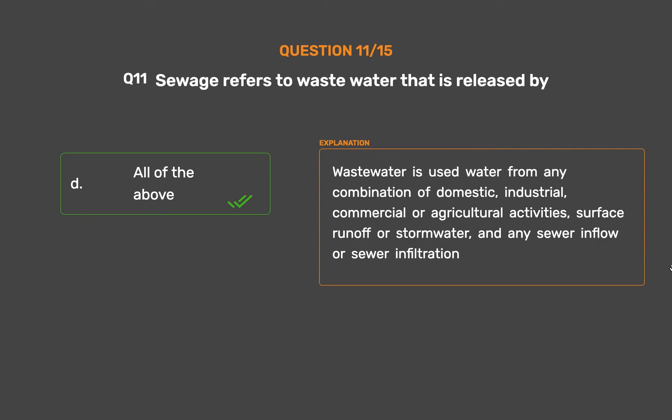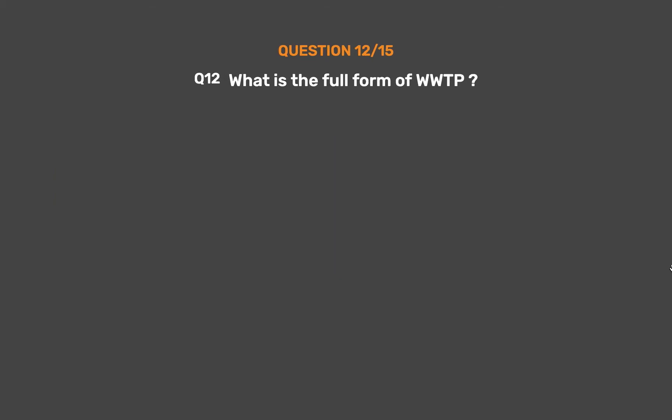Wastewater is used water from any combination of domestic, industrial, commercial or agricultural activities, surface runoff or stormwater, and any sewer inflow or sewer infiltration.